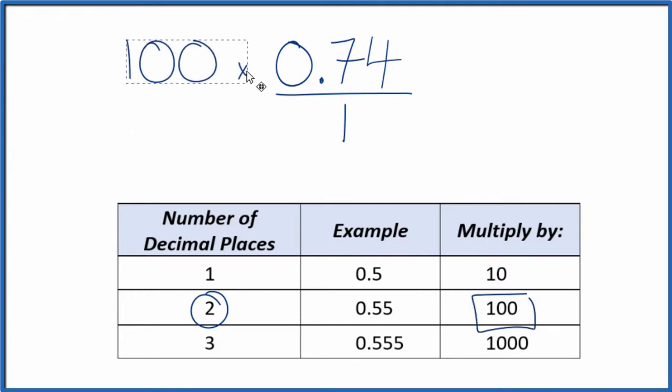So 100 times 0.74, that equals 74. So we have a whole number. But we can't just multiply the numerator by 100. We also have to multiply the denominator by 100.